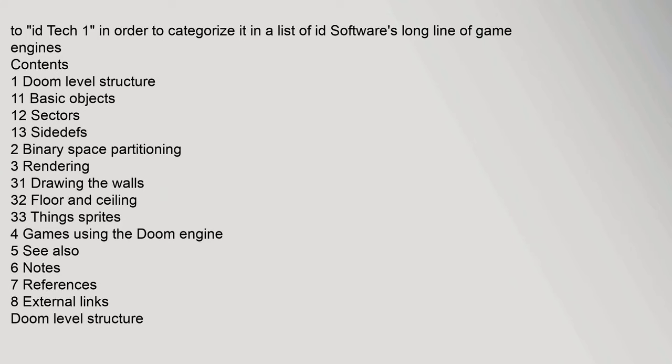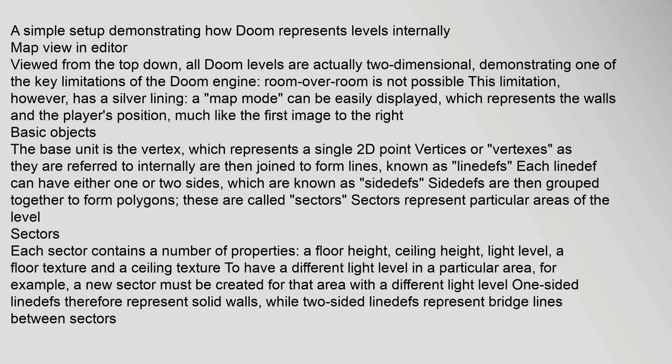Doom level structure: viewed from the top down, all Doom levels are actually two-dimensional, demonstrating one of the key limitations of the Doom engine — room over room is not possible. This limitation, however, has a silver lining: a map mode can be easily displayed, which represents the walls and the player's position.